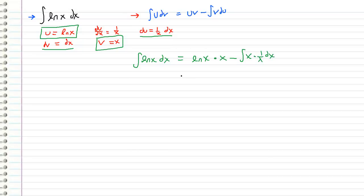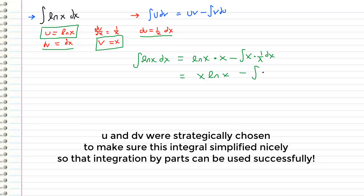So we can do some simplifications right here. I'm going to rewrite this as x natural log of x minus the integral. These x's cancel, leaving just a dx, which gives us x natural log of x minus x.